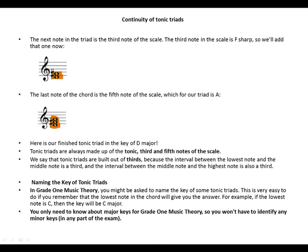You only need to know about major keys for Grade One music theory, so you won't have to identify any minor keys in any part of the exam. So you have four possible answers: C major, D major, G major, or F major.